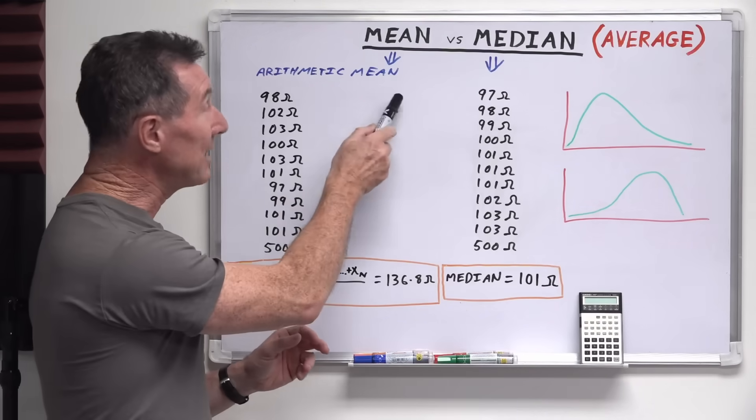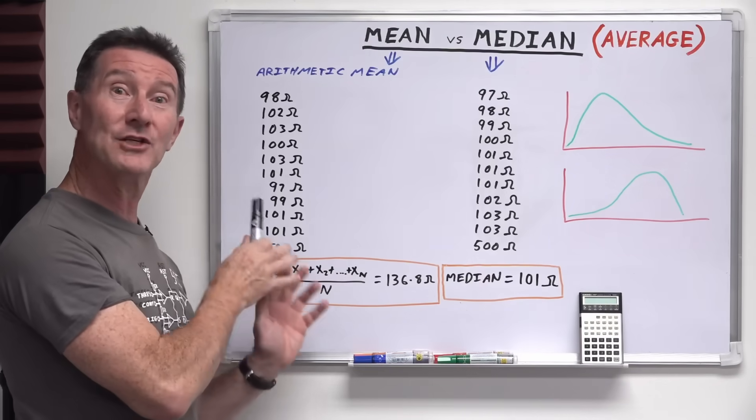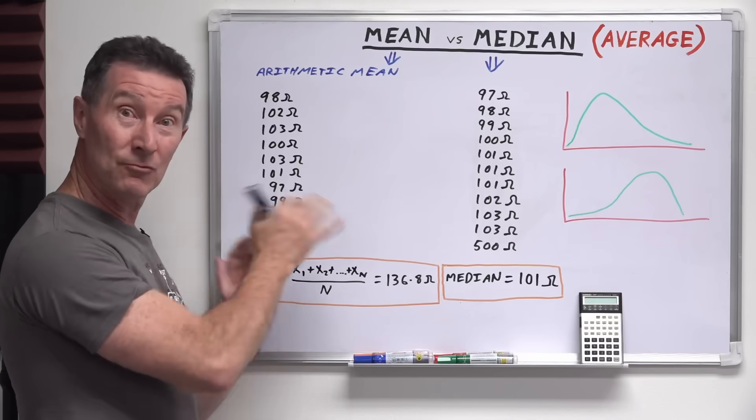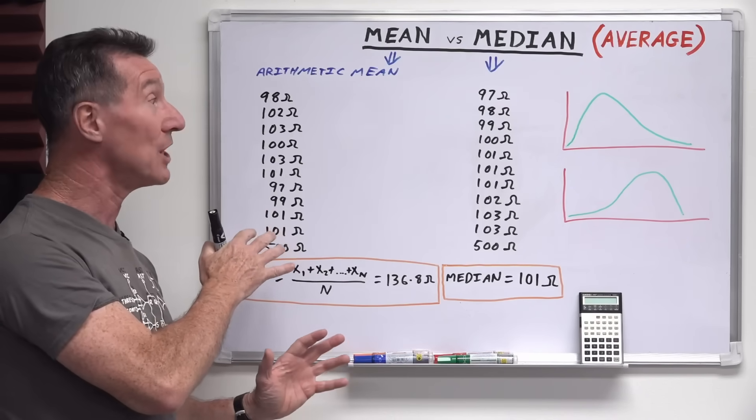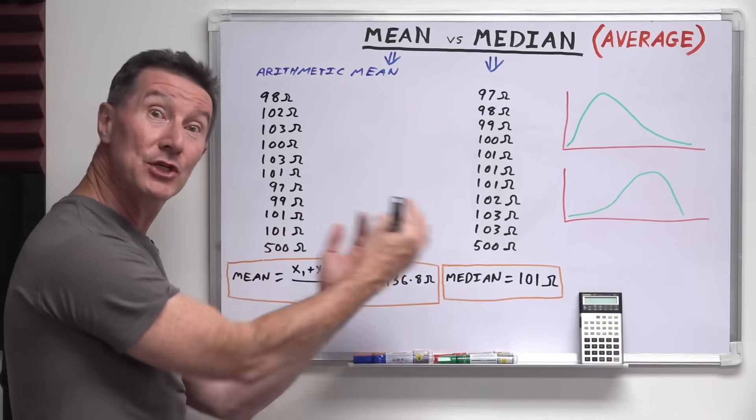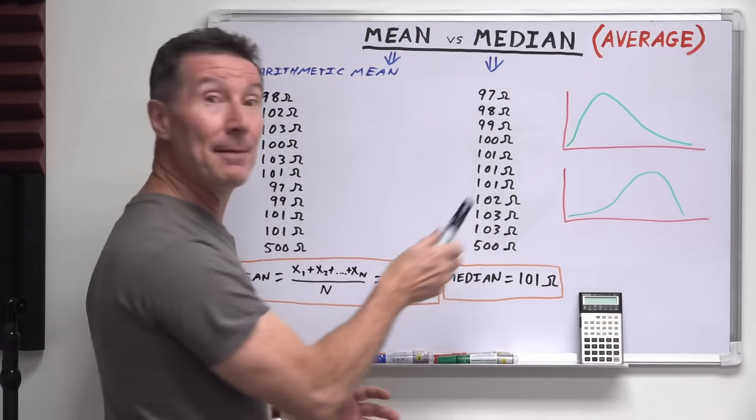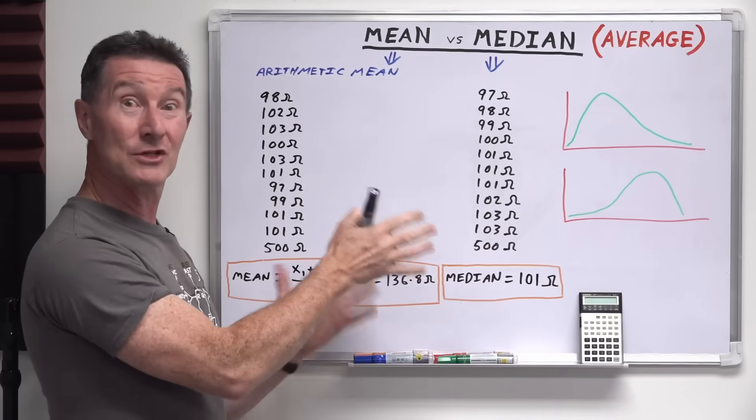So using the arithmetic mean or average value actually has problems when you have data points that are like really outlier data points, but they might still be genuine, or your data is skewed in one direction or the other. And by skewed I mean, here's an example, or in mathematical terms they call it skewness.